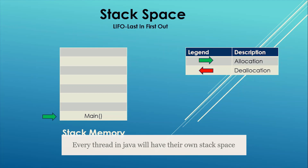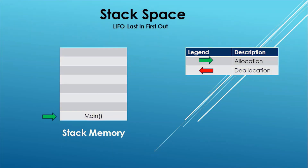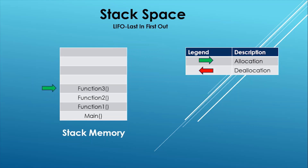When the program starts execution, main will be added first on the stack. Suppose main method has a call to function 1, and function 1 internally has a call to function 2. So similar to this, the stack will start getting filled up. First main will be there, then function 1 will be allocated memory on the stack, then function 2 as well. Suppose we have one more function, function 3, which is called through function 2 — so it is calling a function within a function.